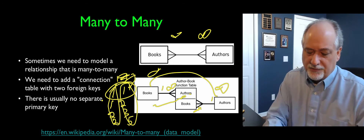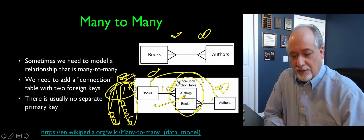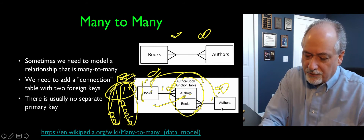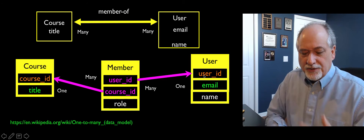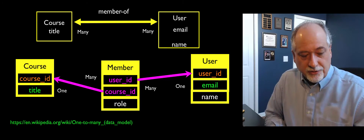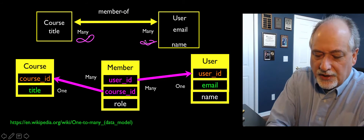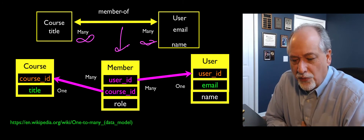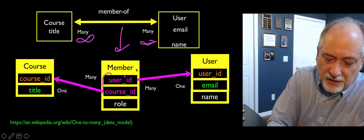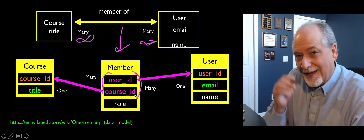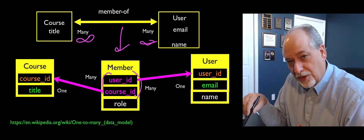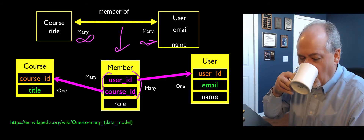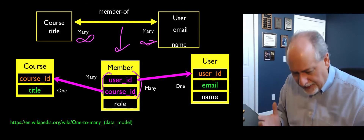The key concept is that we need to add another table — we can't do it with just two tables. We have our books table and our authors table, each with a primary key ID field. We draw a logical diagram with many-to-many on both sides, then make the table in the middle. It's rare to put a standalone primary key in the junction table. Instead, the uniqueness constraint and primary key is the combination of user ID and course ID. We can have duplication in each column individually, but not in their combination.